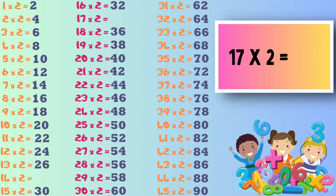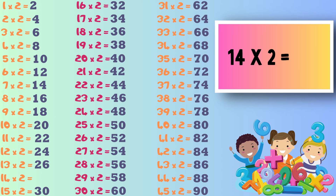Next it's 17 times 2 and the answer to this one is 34. Now the last sum of the game — it's 14 times 2. Can you get the right answer? The answer is 28.